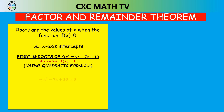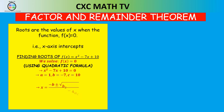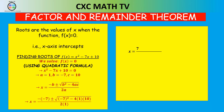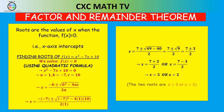Using the quadratic formula to solve x squared minus 7x plus 10 equal to 0: the coefficient of x squared, a, is 1; the coefficient of x, b, is minus 7; and the constant, c, is 10. So using the quadratic formula x equals negative b plus or minus the square root of b squared minus 4ac over 2a, we get x equals 7 plus or minus the square root of 49 minus 40 over 2, which is 7 plus or minus the square root of 9 over 2, giving 7 plus or minus 3 over 2. So the two roots are x equals 5 or x equals 2.